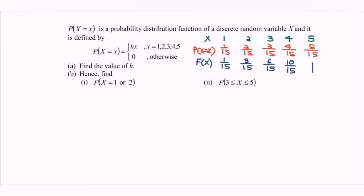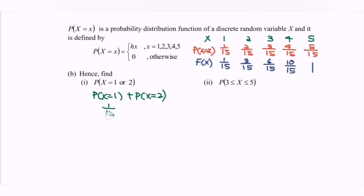Referring to question B, we need to find the probability that x = 1 or x = 2. Since 'or' means we add the probabilities, we substitute: 1/15 + 2/15 = 3/15, which simplifies to 1/5. That is the probability for x = 1 or x = 2.